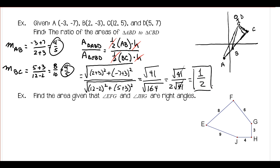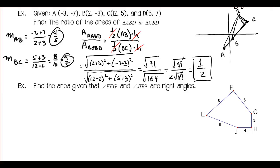That was quite an involved problem — you need to understand the underlying concepts to solve it efficiently. Otherwise you'd have to use Heron's Formula and the distance formula many times, which is possible but not recommended. For the last example, we need to find the area given that angles EFG and GHJ are right angles. We have a right angle here and a right angle here, so the plan is to divide the figure into three triangles.